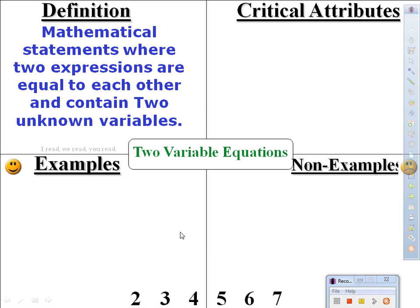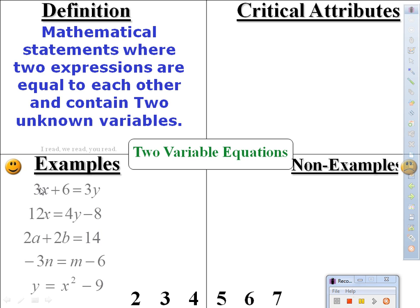Let me show you some examples. 3x plus 6 equals 3y. 12x equals 4y minus 8. 2a plus 2b equals 14. Another example is negative 3n equals m minus 6. And the last example: y equals x squared minus 9.